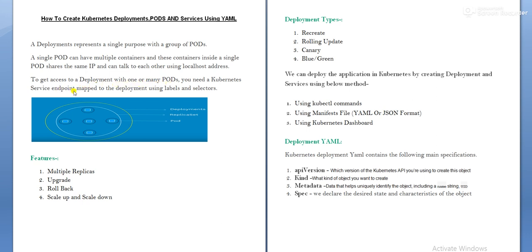To get access to a deployment with one or many ports, you need a Kubernetes service endpoint. If an application is running inside a container inside a pod and somebody wants to access that application from outside, we need to establish a service endpoint. I will show you in the lab session how to create a service endpoint for the application.